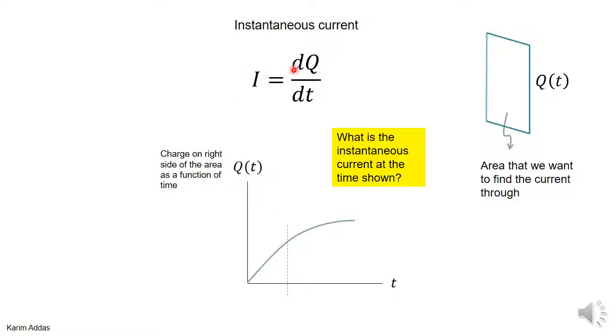That would be written as dQ by dt, and it's basically the slope of the curve at that point.